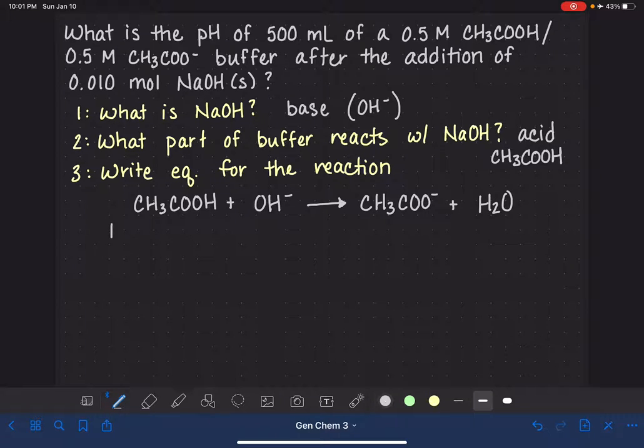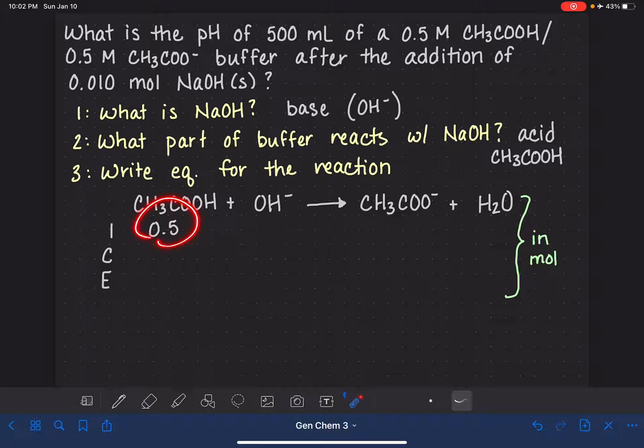Guess what? We're going to make an ice table. We're going to make an ice table for this buffer. The ice table, when we're dealing with a buffer calculation, has to be a little bit different. The ice table has to be in units of moles. Normally, we do our ice tables in molarity, but in this situation, it needs to be in units of moles.